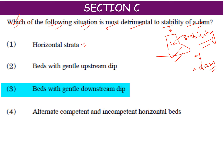The horizontal strata will be like a plane, and on top of it we have placed the dam. Water will be behind the dam and will be seeping, but it will not affect the dam's stability because the water is on a flat surface. So the dam can bear it. This is not your answer because it is not that detrimental.